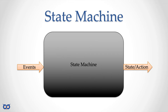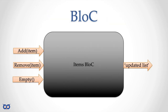In the next video we'll turn our state machine into the BLoC. Events will come in and the current state will come out of that black box. The state machine and the BLoC pattern look very similar — once we connect it with streams, we'll see the whole picture. Let's now look at some code.